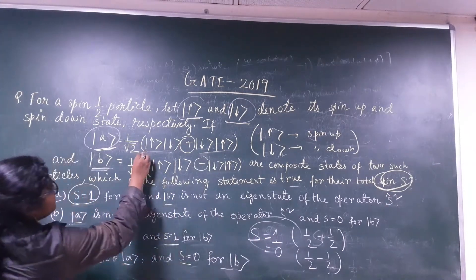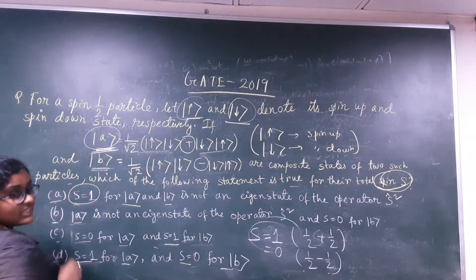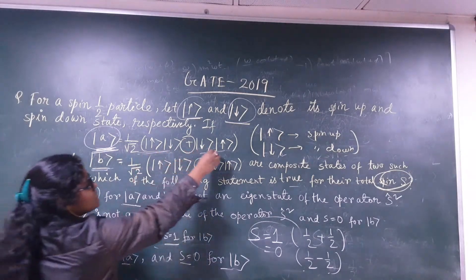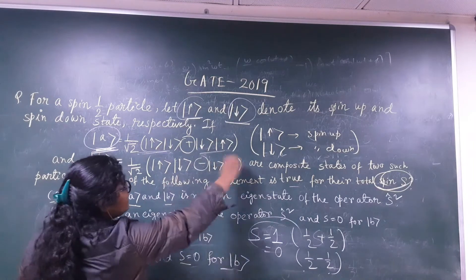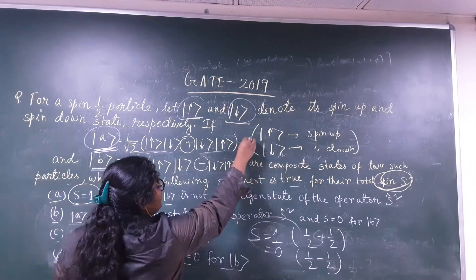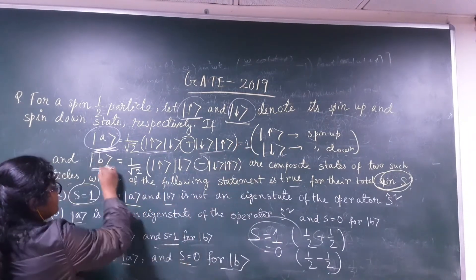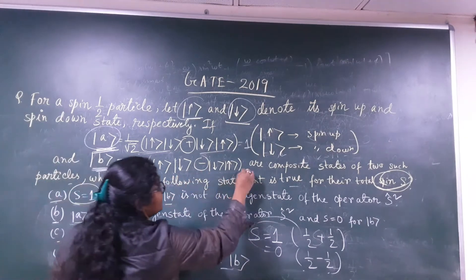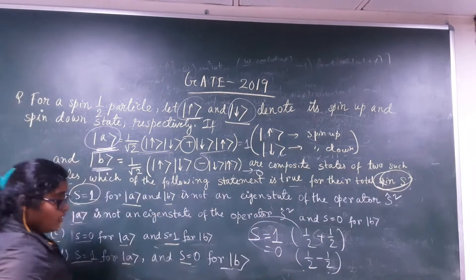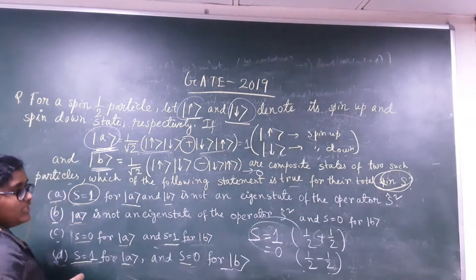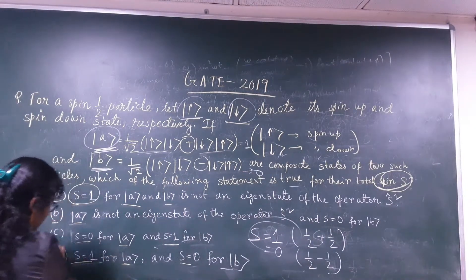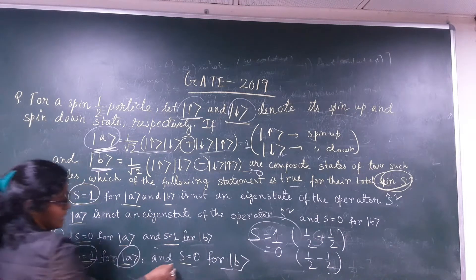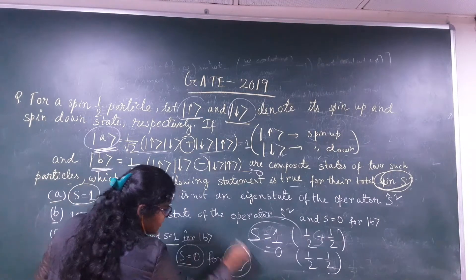So for state |A⟩, the combination corresponds to half + half, giving a total spin of S = 1. For state |B⟩, the combination corresponds to half − half, giving a total spin of S = 0. Therefore, option D is correct: S = 1 for |A⟩ and S = 0 for |B⟩.